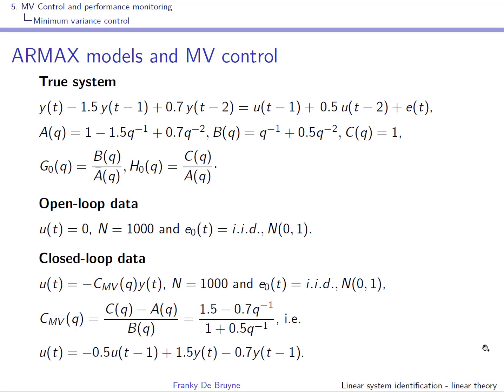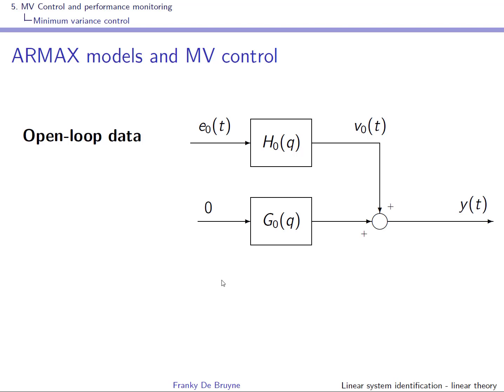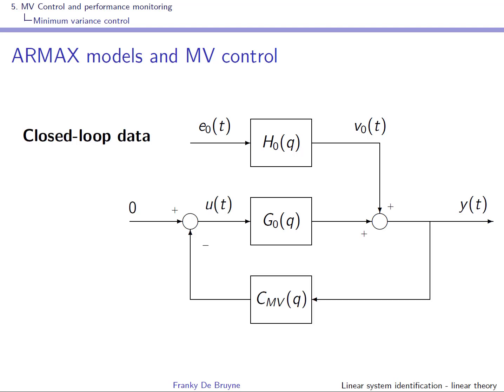So C of Q minus A of Q over B of Q — with a simplification by Q minus one occurring — gives the controller as a difference equation. We consider two situations: one where the input is zero, using a realization E zero of E of T; and one with data generated in closed loop, where U of T depends on Y using the same realization E zero. We compare the open-loop situation (input kept at zero) with the closed-loop situation using the minimum variance controller.